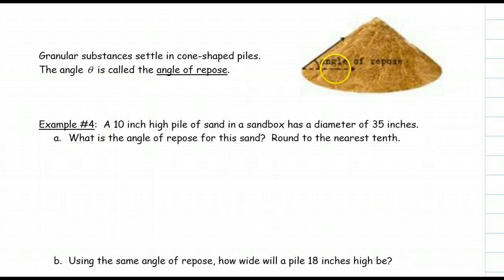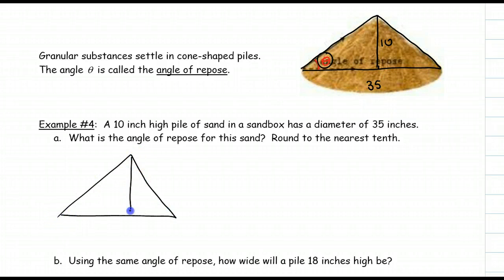We have a cone. Granular substances settle in cone-shaped piles. The angle theta is called the angle of repose. This says a 10-inch high pile of sand in a sandbox has a diameter of 35 inches. So if you mark on your paper what this means, we have a height of 10 and the diameter is 35. What's cool about this is that we can really make two triangles, but we really just need one. We're looking for our angle theta. If I know my height is 10 and my diameter is 35, that makes this one portion just 17.5. And our angle is in the corner.